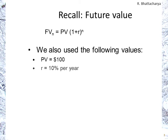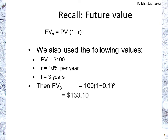We look at $100 at 10% with n equal to three years. The future value at 3 equals 100 times 1.1 to the power of 3, which equals $133.1. On the timeline, the $100 goes out, and after three years you receive $133.1. Those two arrows are equal and opposite in value — in other words, $133.1 in three years is equal to $100 today.